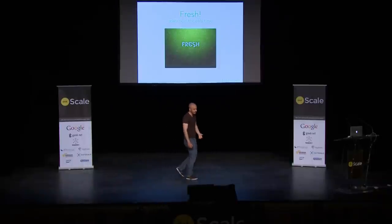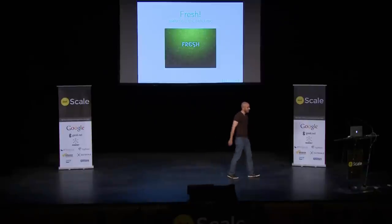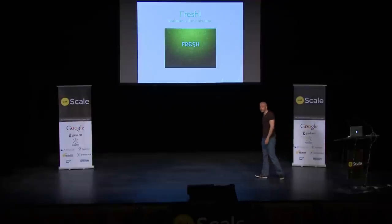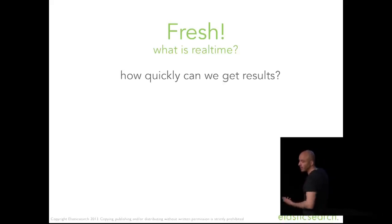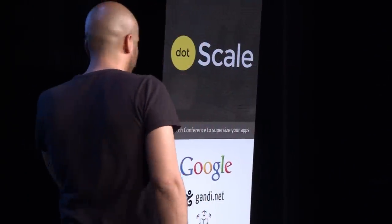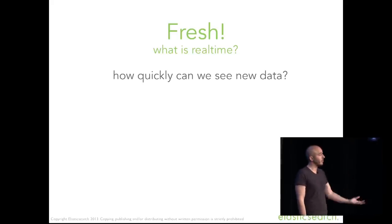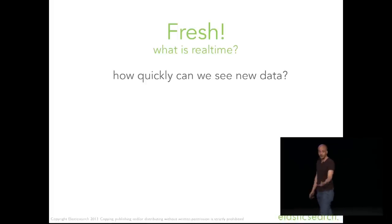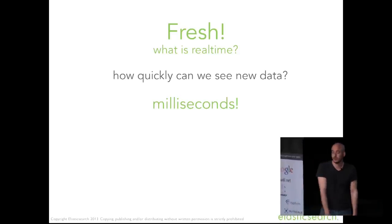We want data to be fresh. Sure, we can ask questions and get answers in hours, but it would be nice if it took milliseconds. Fresh means how quickly can we get results — even for complex aggregations tied together with slicing and dicing. It would be nice if it were milliseconds instead of hours. Also, freshness means how quickly can we see new data. If someone just tweeted and I can immediately search for it, that's extremely powerful compared to searching two days later when it's probably irrelevant. Within milliseconds, we should be able to search new tweets, new check-ins, new code on GitHub.